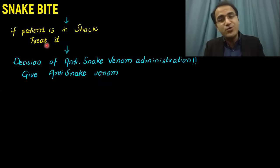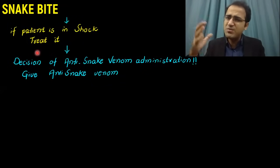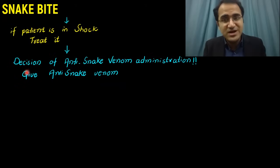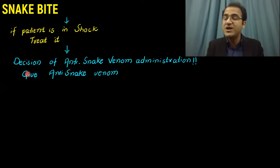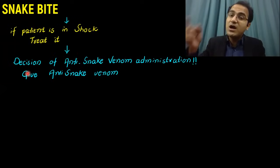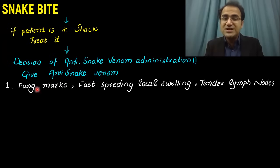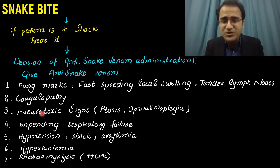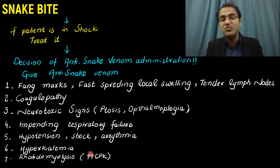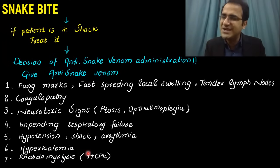Look for limb swelling, and if severe, consider fasciotomy as the patient can develop compartment syndrome. If the patient is in shock, treat with fluids. Then decide whether to give anti-snake venom. Indications include: classical fang marks, fast-spreading local swelling, tender lymph nodes, coagulopathy, neurotoxic signs like ptosis and ophthalmoplegia, impending respiratory failure, hypotension, shock, arrhythmia, hyperkalemia, and rhabdomyolysis with elevated CPK — these all indicate the patient deserves polyvalent anti-snake venom.